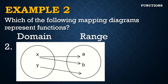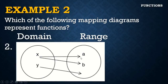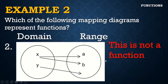In another mapping diagram example, one value of X is related to two values — A and B — in the range. That means one value of X is related to two values of Y, making this a one-to-many correspondence. One-to-many is not a function.